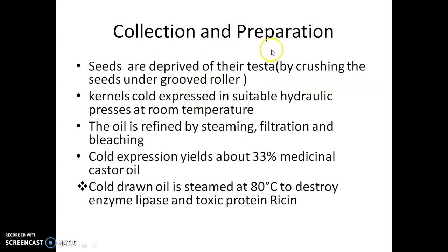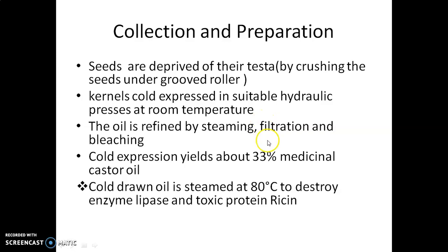How is castor oil collected and prepared? The seeds are deprived of their testa. The seed coat is removed by crushing the seeds under grooved rollers, and we get the kernels. These kernels are cold-expressed in a suitable hydraulic press at room temperature — that is why this is known as cold-drawn oil; no high temperatures are used. After collecting this oil, it is refined by steaming. Steaming coagulates and destroys proteins or enzymes like lipase and the toxic protein ricin, which is very harmful and lethal and is present in raw castor oil. The oil is further refined by filtration and bleaching.